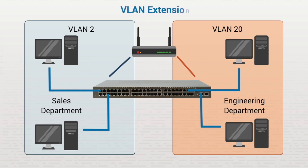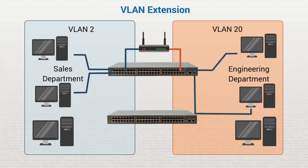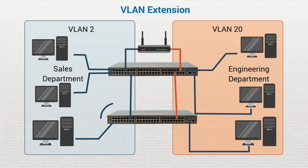Now let's expand our example a bit. Imagine you also have members of the sales department whose offices aren't physically close to the other sales team members. In this case, these members would be connected to a different physical switch, but they could still be configured to be part of VLAN 2. The same is true if you had members of the engineering department connected to a different switch. You'd configure the second sales team's ports to VLAN 2 and the second group of engineers' ports to VLAN 20.